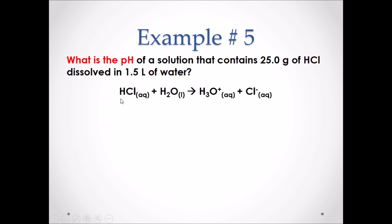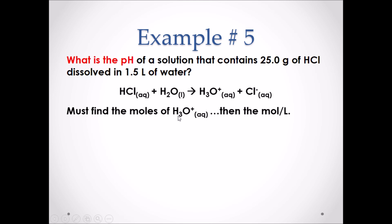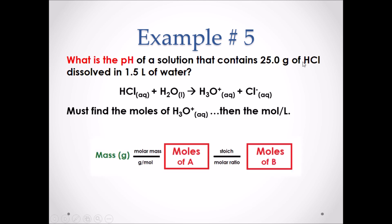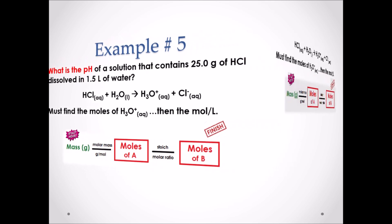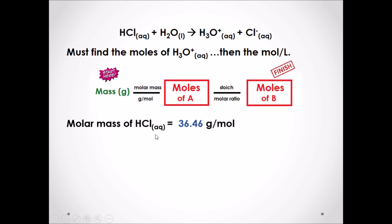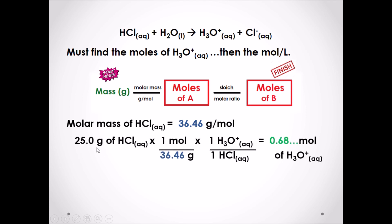In this case, hydrochloric acid reacts with water, transferring its hydrogen to water and forming the products H₃O⁺ and Cl⁻. First, we find the moles of H₃O⁺, then divide by the volume of water to get moles per liter. We start with the mass of HCl — 25.0 grams — and divide by its molar mass of 36.46 grams per mole to find the moles of HCl.